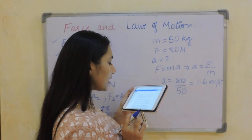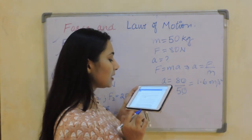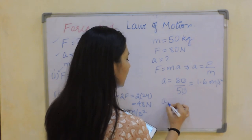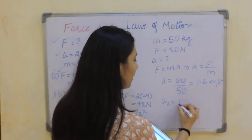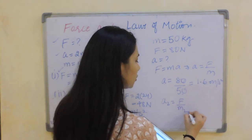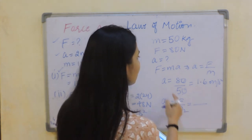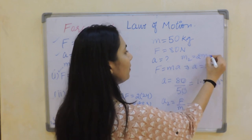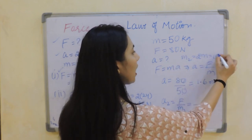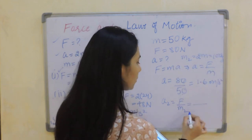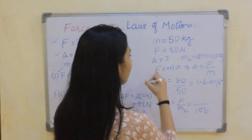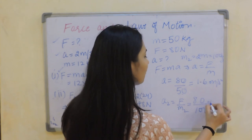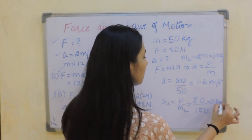The next part asks: what would be the acceleration if the mass were doubled? A2 equals F divided by M2. M2 is twice of 50 which is 100 kg, and the force remains 80 Newton. So A2 equals 80 divided by 100, giving 0.8 m/s².